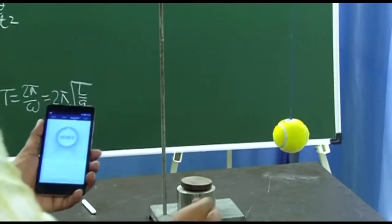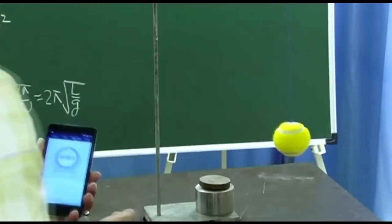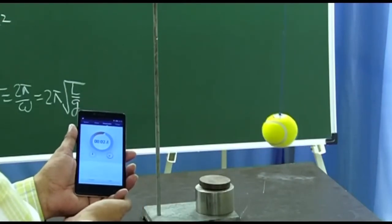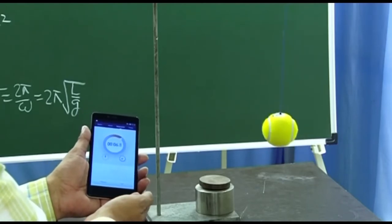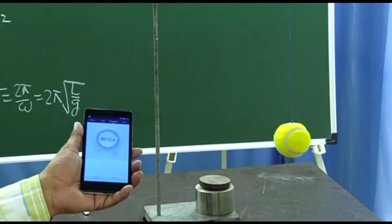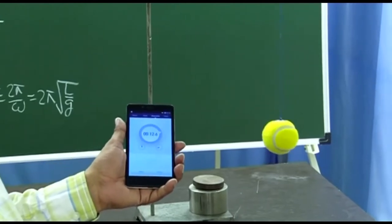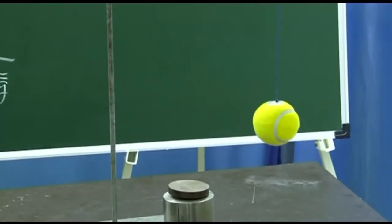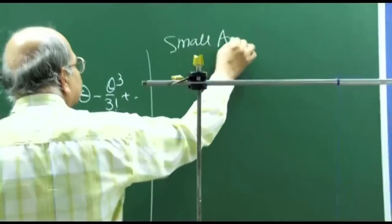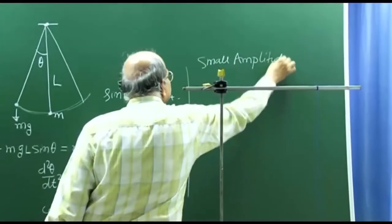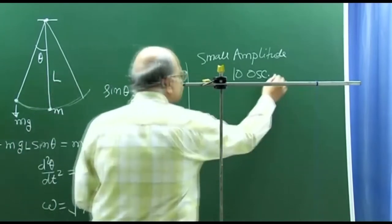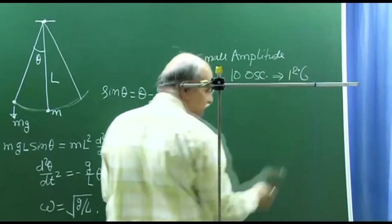So let me first oscillate with small amplitude. When it comes to this side, I will start the stopwatch. 1, 2, 3, 4, 5, 6, 7, 8, 9, 10. So in 10 oscillations, it took 12.6 seconds. 10 oscillations and it took 12.7 seconds, 12.6 seconds.